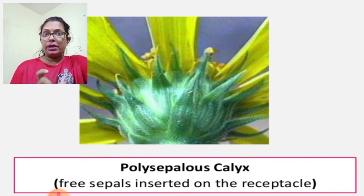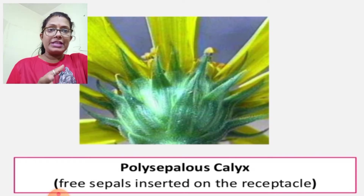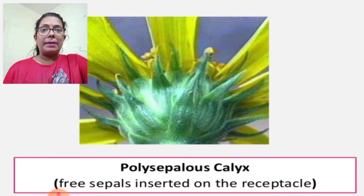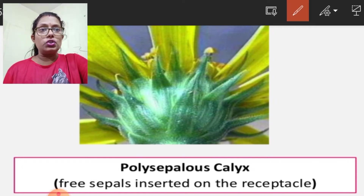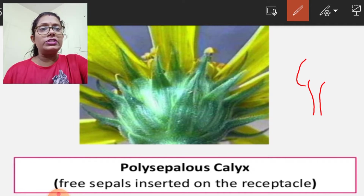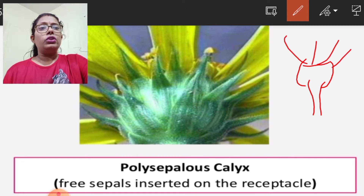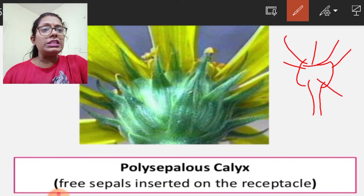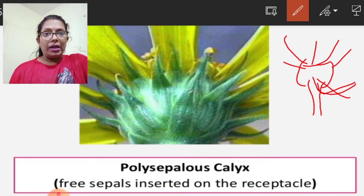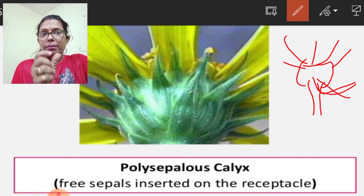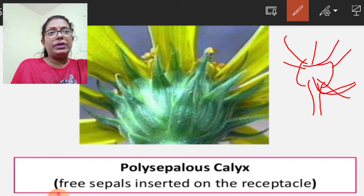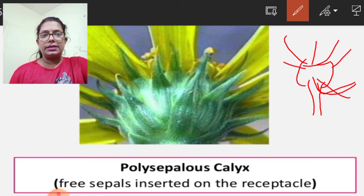In polysepalous calyx, the sepals are inserted on the receptacle — the broad platform on which all floral parts are arranged. The stalk of the flower widens as it goes upward, and this broad upper part is known as the receptacle, on which all the floral parts are attached.